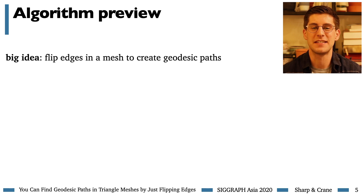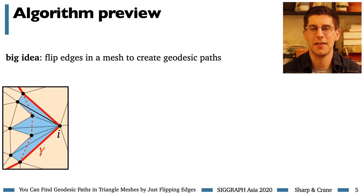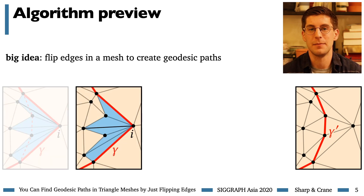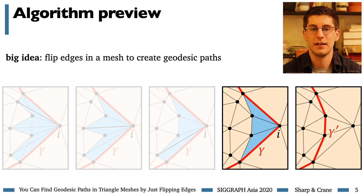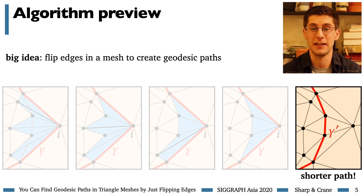The big idea of our algorithm is simple enough to describe in a single slide: we're going to flip edges to create geodesic paths. Suppose we have some path marked in red that isn't yet a geodesic. Our basic operation is to pull the curve tight in this local neighborhood, yielding a shorter version of the curve. Remarkably, this can be done with a simple sequence of edge flips. After the flips, we just slide the curve over to be a new, shorter version of itself. Applying this procedure repeatedly eventually yields a geodesic, and we show this always works, even on curved surfaces.